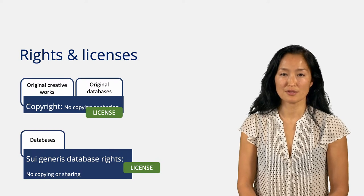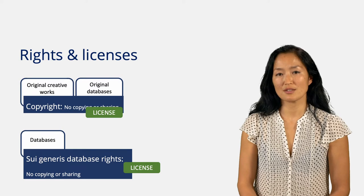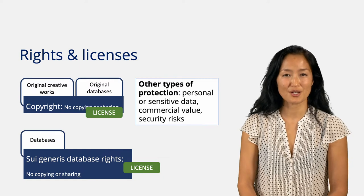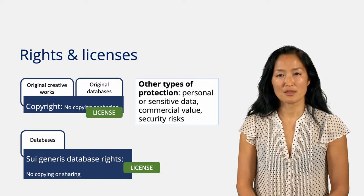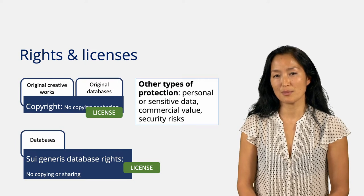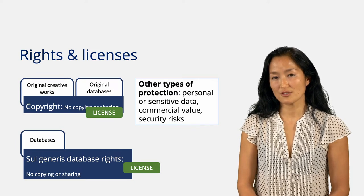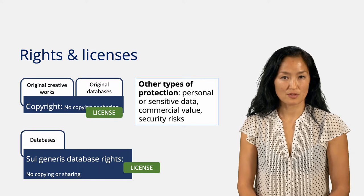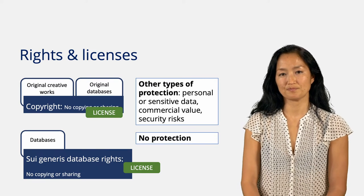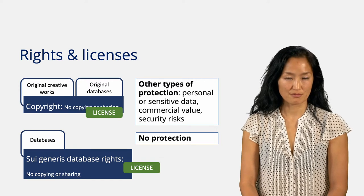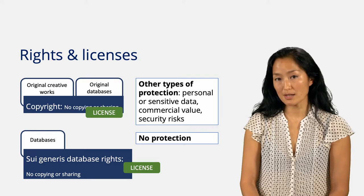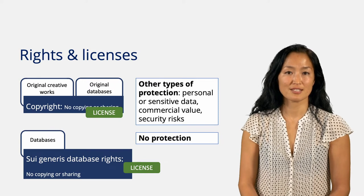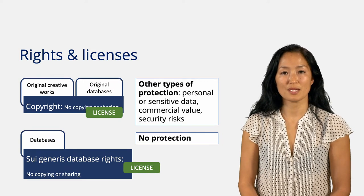IP rights can be licensed away to users of published research data so that others get the right to copy and share data in original or modified form. In addition to IP rights, research data may be protected by other laws — in particular if the datasets contain personal or sensitive data, if the data have commercial value, or present security risks. These types of data cannot be shared openly, so the question of licensing is not relevant here. Finally, there are data that have no protection: data for which IP protection has expired, and data which do not fulfill the criteria for IP protection. These data can be freely reused and licenses cannot be attached to them.